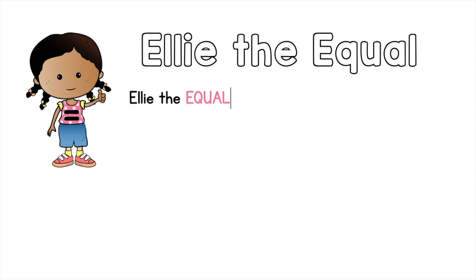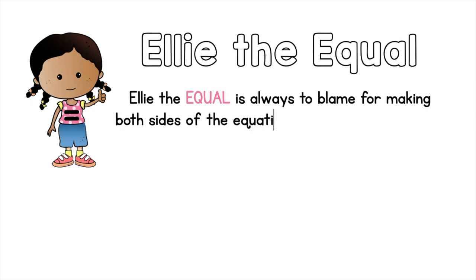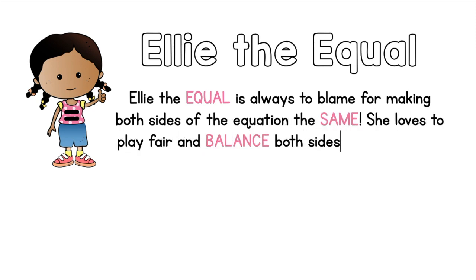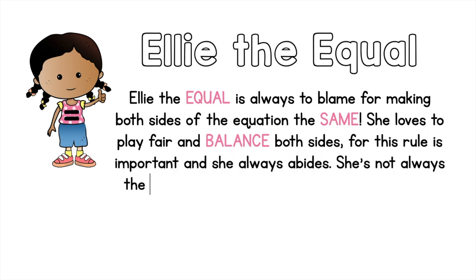Ellie the equal is always to blame for making both sides of the equation the same. She loves to play fair and balance both sides, for this rule is important and she always abides.